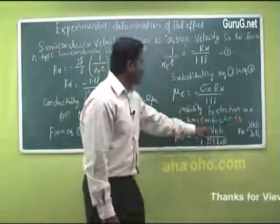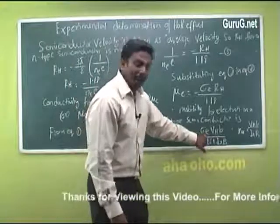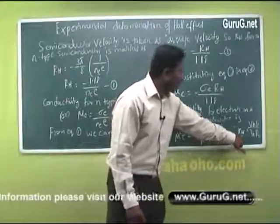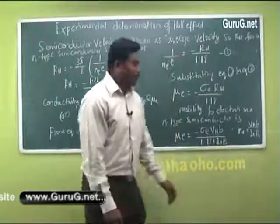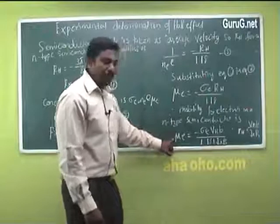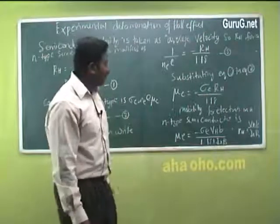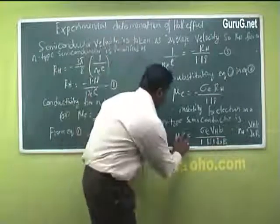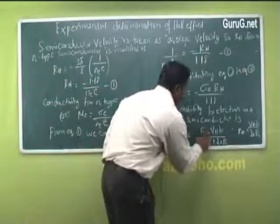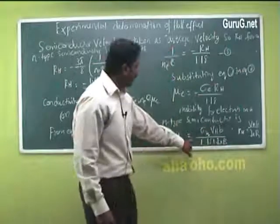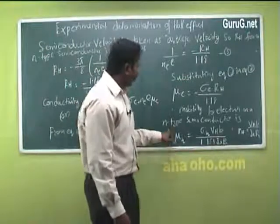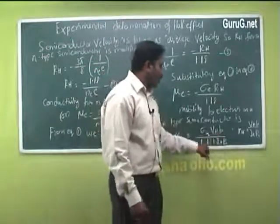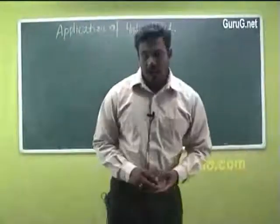Therefore, the mobility of electrons in an n-type semiconductor is given as μe equals minus σe·VH·B / (1.18·IX·b), where the hall coefficient RH equals VH·B / (IX·b). This is the mobility of charge carriers for n-type material. For a p-type material, the negative sign will not be present. Therefore, for holes, the mobility μh equals σh·VH·B / (1.18·IX·b). These are the applications of the hall effect.